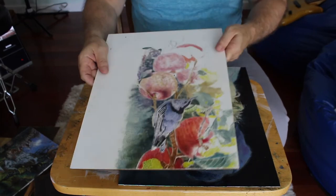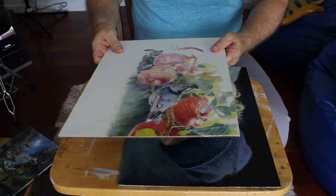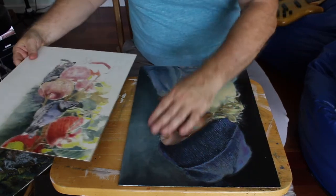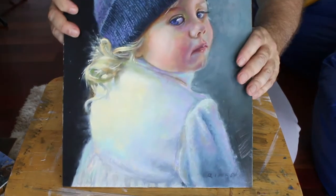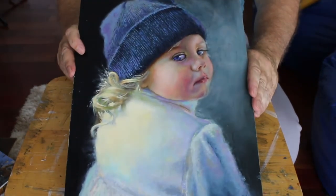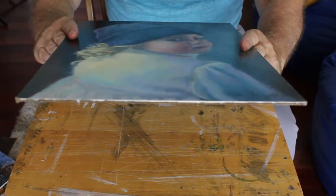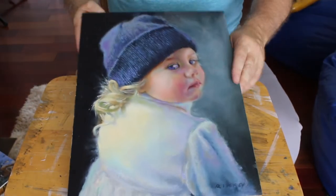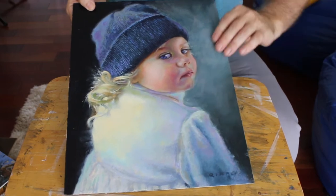You can see where the gesso and how slick it is. Like there's no tooth to it. It's not a bad thing. I mean, there's people that use that, like Robert Bateman if you're familiar with his work. But like this is a portrait that I did on there, you see no tooth at all. There isn't none. It's slick.